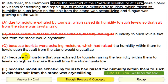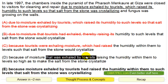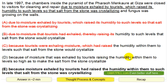This answer choice has more problems. 'Because of moisture' — what kind of moisture? The kind that was exhaled by Taurus. 'Because of moisture raising the humidity within them to levels so high as to make the salt from the stone crystallize.' The wording is more complex, and it's not really 'because of moisture' doing this — it was because moisture was doing something. The 'of' here can be removed. That's why answer choice E is the correct answer.